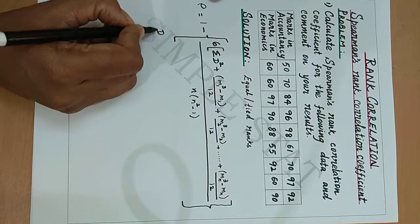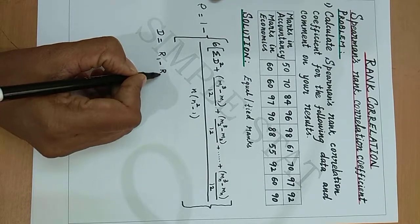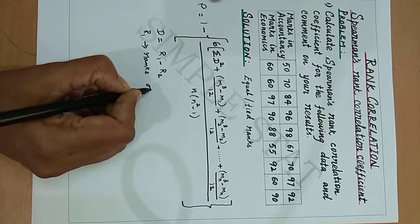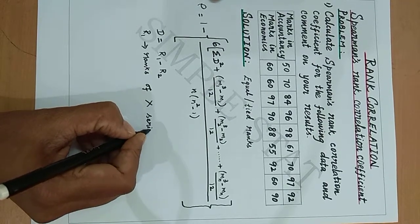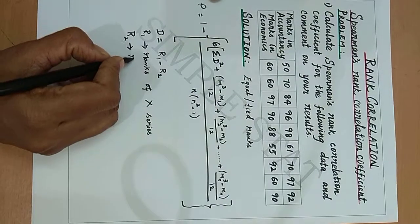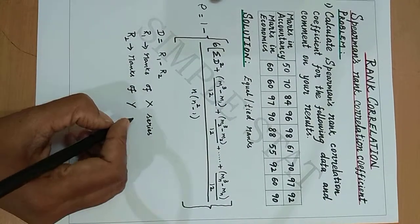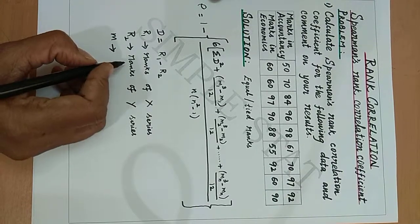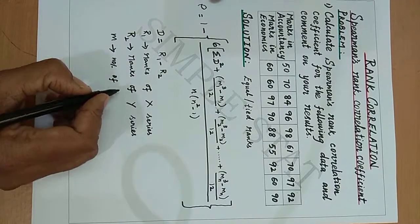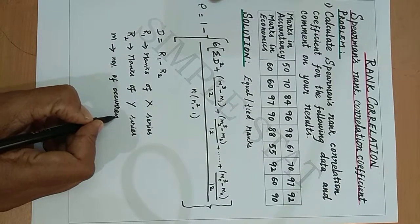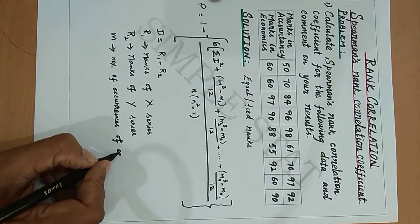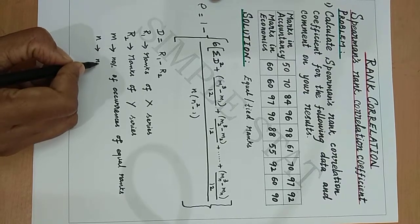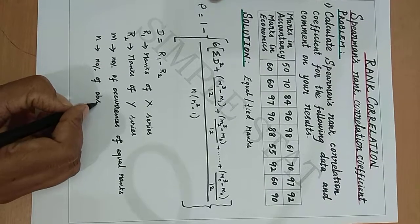Here D is equal to R1 minus R2, where R1 denotes the ranks of the X series, R2 denotes the ranks of the Y series, M denotes the number of occurrences of tied values, and N denotes the number of observations.